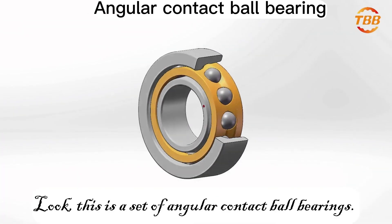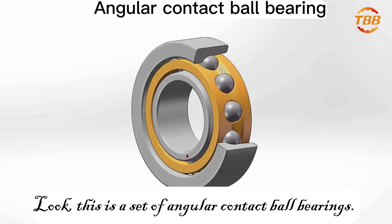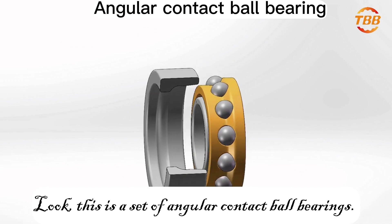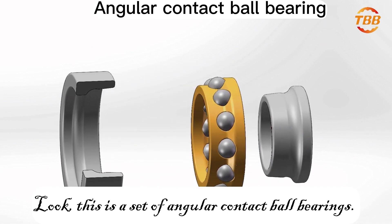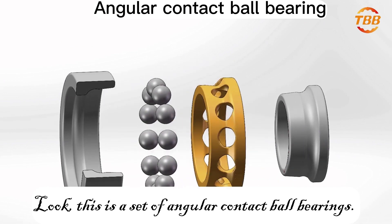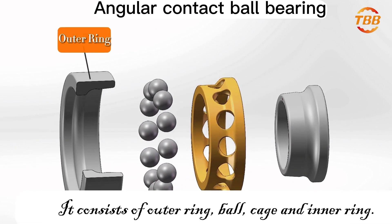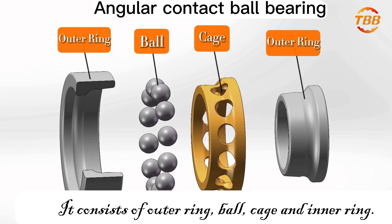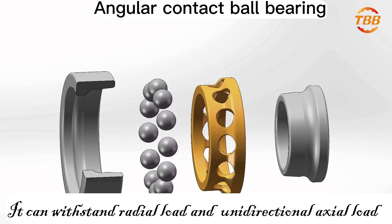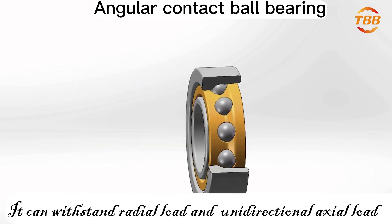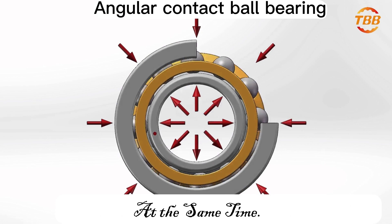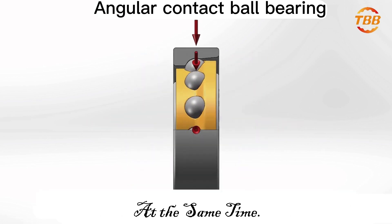This is a set of angular contact ball bearings. It consists of outer ring, ball, cage, and inner ring. It can withstand radial load and unidirectional axial load at the same time.